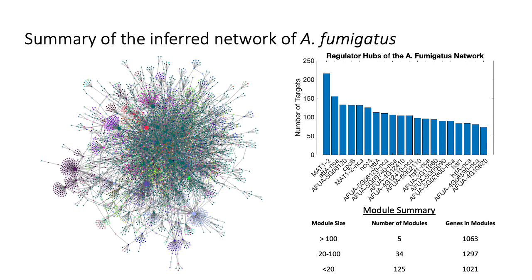Our inferred network is composed of 5,574 genes and a total of 7,422 edges. The network displayed is colored by module. On the right, I have shown the top 20 most connected regulators of the predicted network. Some of these regulators are tagged with the NCA prefix. These represent the transcription factor activity profiles of the genes that are computed with NCA. In particular, the regulator with the second most targets is the estimated transcription factor activity of ATFA. I'll be discussing this gene later as it appears to be an important component of the LCO response mechanism.